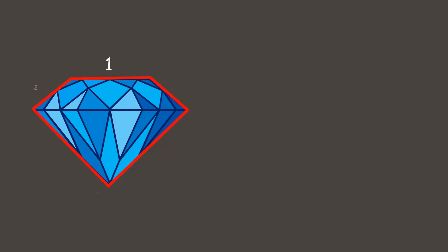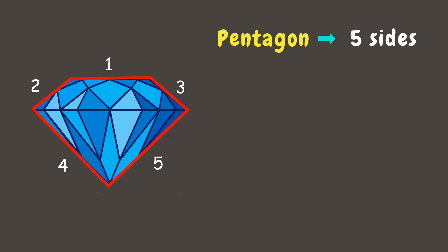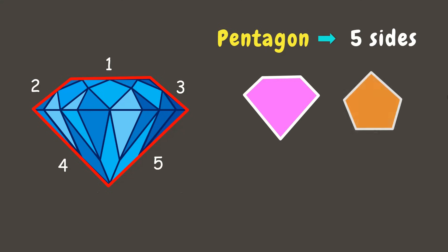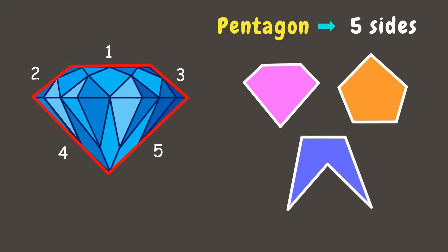Let's go to the next one. We have a diamond. We can form a five-sided polygon from this diamond and we call this a pentagon. A pentagon has five sides and five angles. Here are other examples of pentagon.